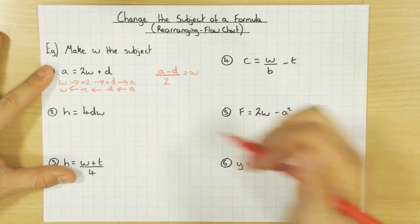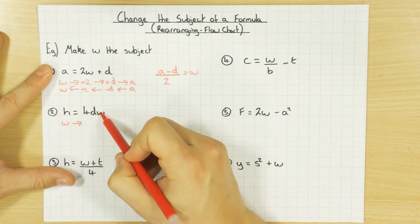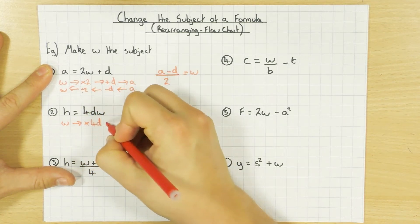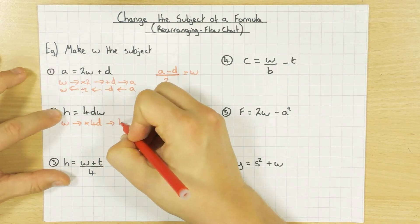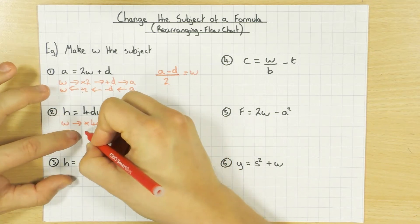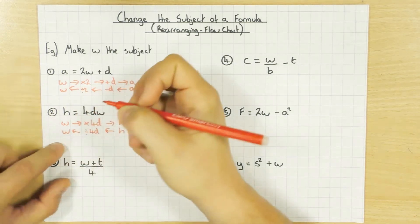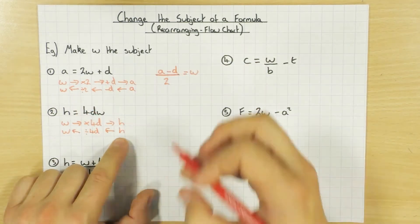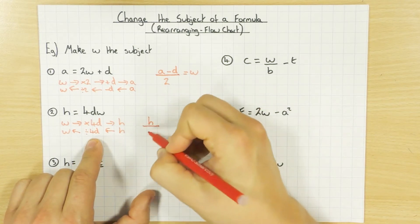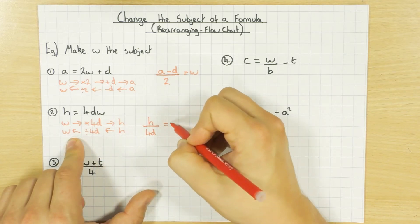Let's have a go at this one then. Again, there's my W. So I'm going to start off my flowchart with W and I times W by 4D — so I times by 4D and I get H there. I go backwards and instead of times-ing by 4D, I'm just going to divide by 4D and that gets me to W. So let's write this out: going backwards, I start off with H and I divide — there's my divide line — by 4D, and that equals W.